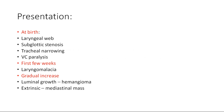Regarding the timing of presentation: at birth, the most common causes are laryngeal web, subglottic stenosis, tracheal narrowing, and vocal cord paralysis. In the first few weeks, stridor is mostly due to laryngomalacia. With gradual increase over time, luminal growths can obstruct the airway — most commonly a hemangioma. Extrinsic causes include mediastinal masses such as lymph nodal masses, thymus, or aneurysms of the great vessels at the thoracic inlet, which can narrow the airway.